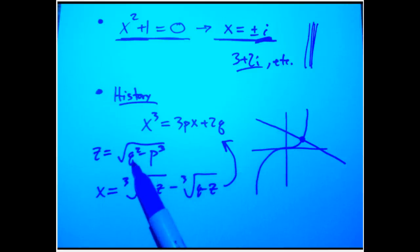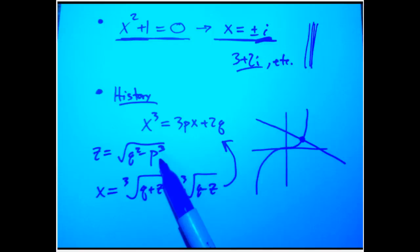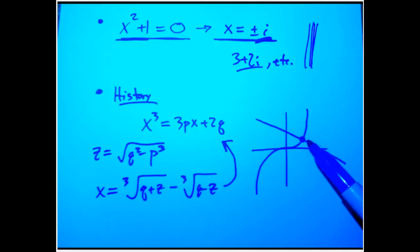But the interesting thing is, if p³ is bigger than q², this would indicate the square root of a negative number. And that's taboo if you don't have some notion of complex numbers. And yet there's nothing that says that's a weird case here geometrically. You should still get a real solution.